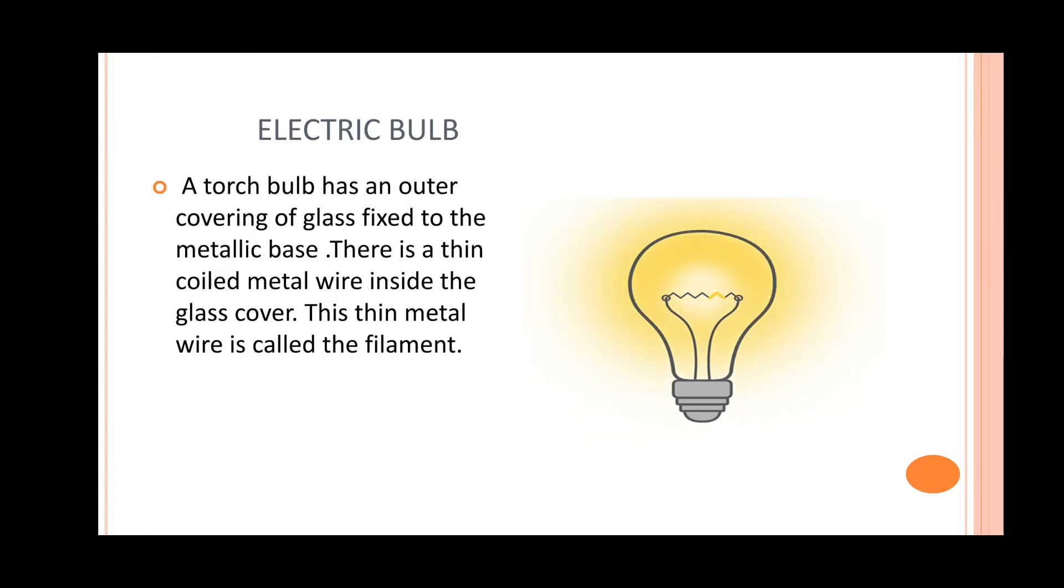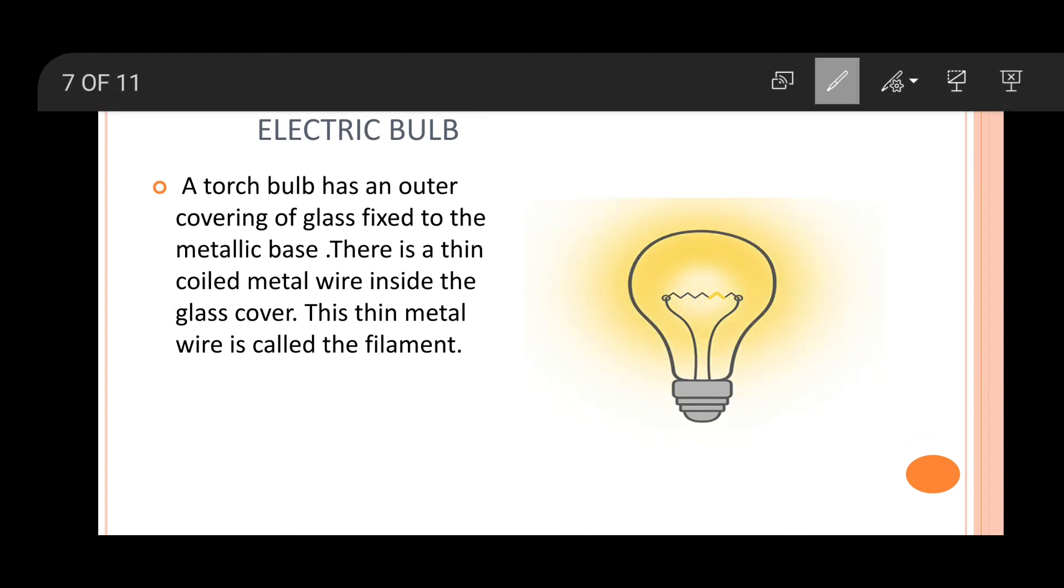Next is your electric bulb. A torch bulb has an outer covering of glass that is fixed on a metallic base. Here you can see the metallic base of the bulb and the outer glass covering. There is a thin coiled metal wire inside the glass cover. This coiled metallic wire is present inside the glass cover, and it is this wire that gets heated up and gives the light. This thin metallic wire is known as the filament of the bulb. This filament is supported by two thick wires. One of these is connected to the metal tip and the other one is connected to the metal cover at the base of the bulb. These two terminals are connected in such a way that they should not touch each other.